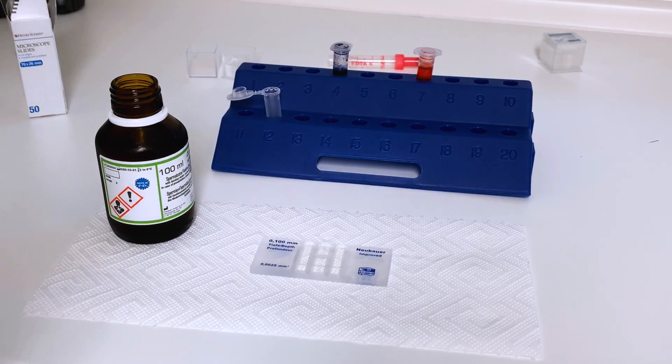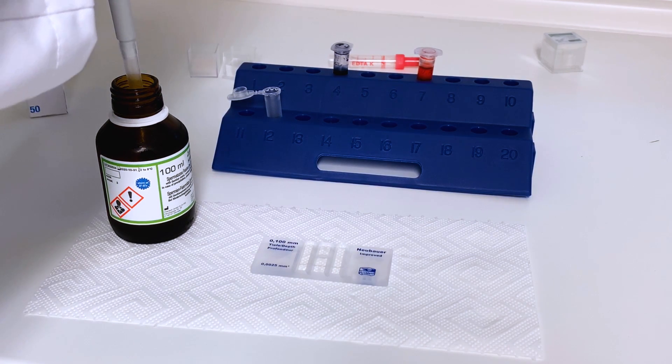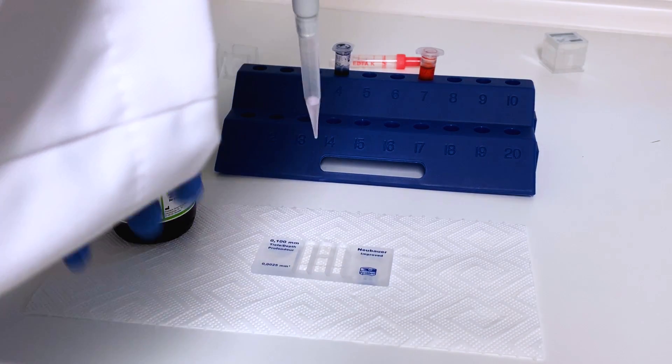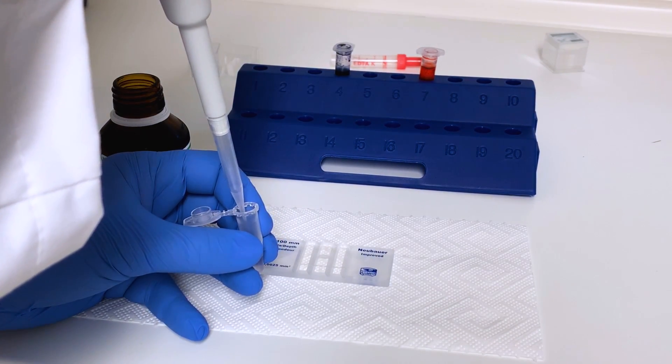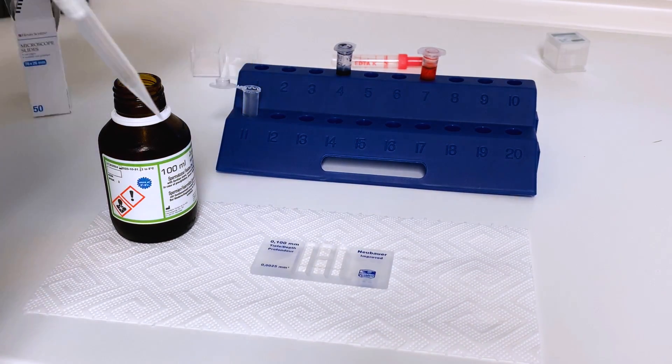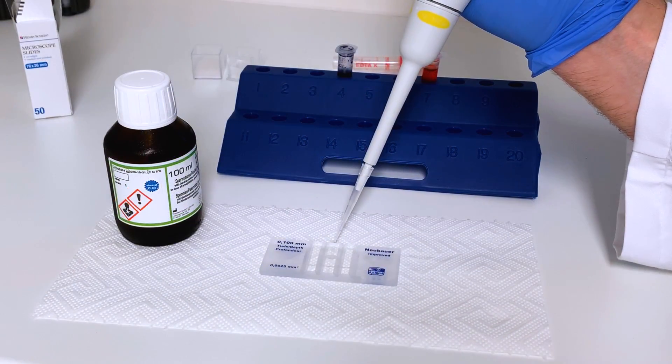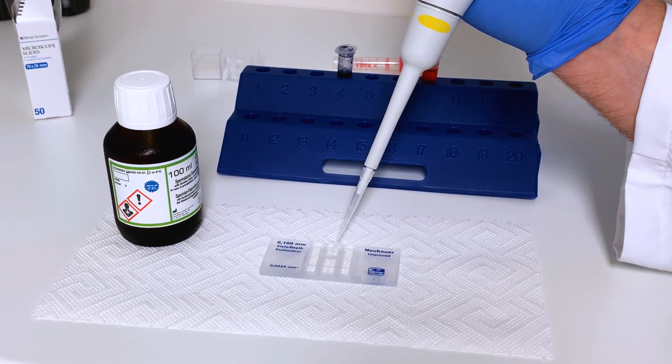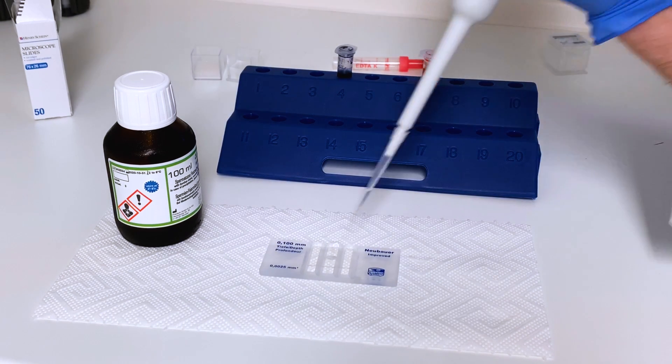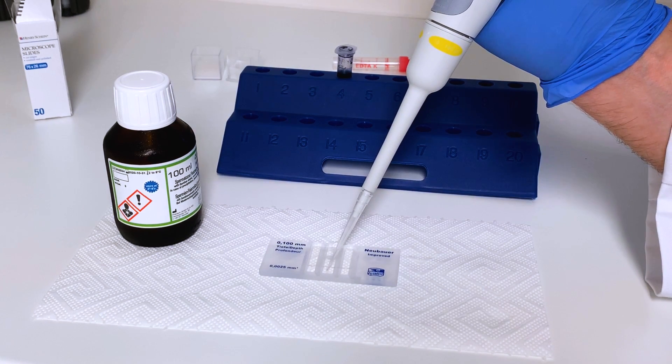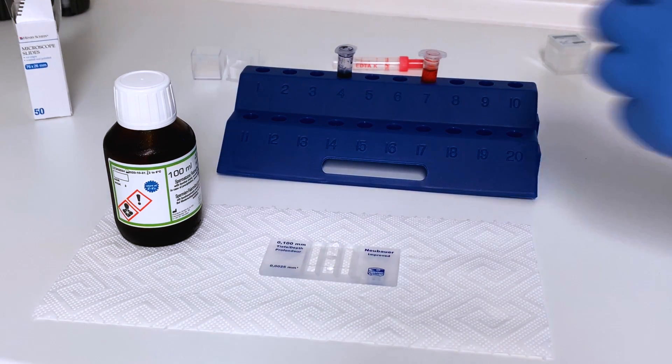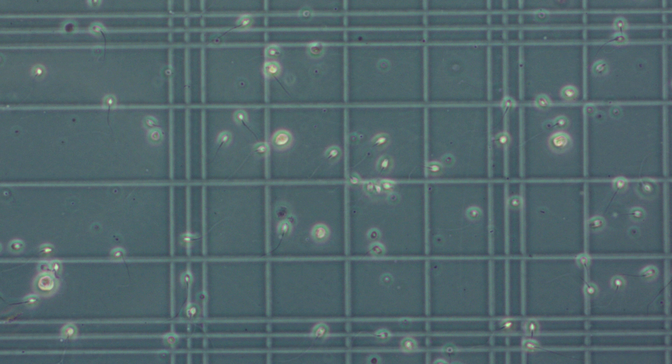Before starting the counting process I have to dilute the ejaculate and this is done by using a special buffer, a so-called WHO buffer which is placed in this cup together with the ejaculate. After having given it a good shake I am placing a cover slide onto the chamber and with a pipette I'm putting two small drops at each side of the slide. The adhesion forces will then pull the solution into the chamber and the sperm will distribute along these small grids that I was mentioning.